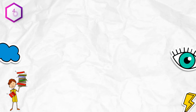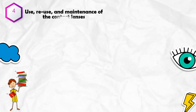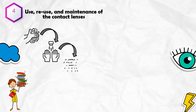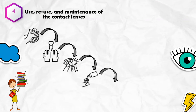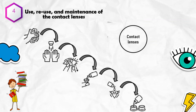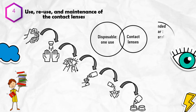Fourthly, the use, reuse, and maintenance of contact lenses. Before putting in contact lenses, we should wash our hands, then dry them with a towel. Next, remove the contact lens and clean it with solution. After that, rinse the contact lens with solution once more, and lastly place the lens in the lens case with new solution.